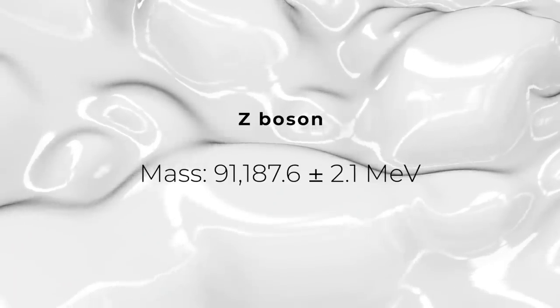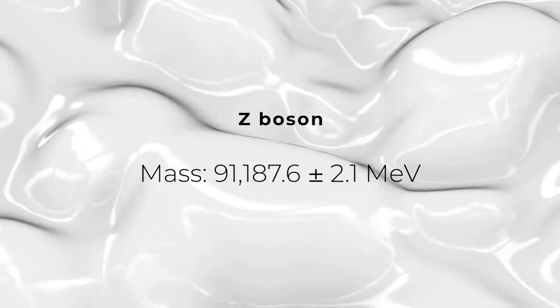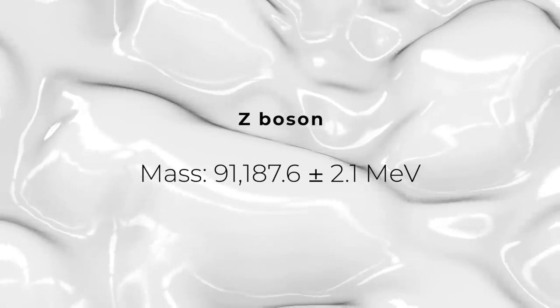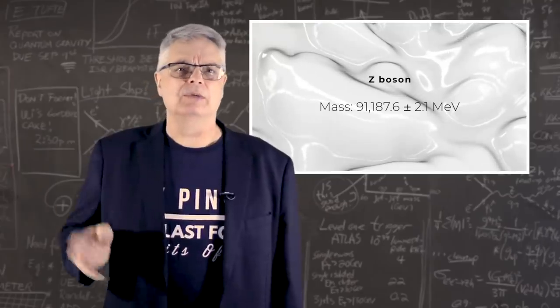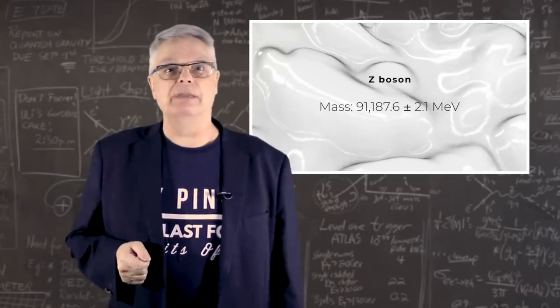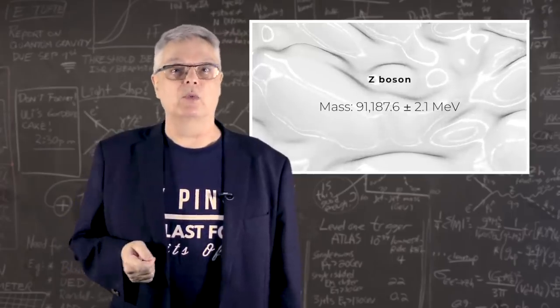The mass of the Z boson was determined to be 91,187.6 plus or minus 2.1 million electron volts, or MeV. Don't worry too much about the meaning of these units, because I'll use the same units throughout. The important thing is the uncertainty, which is 2.1 MeV.